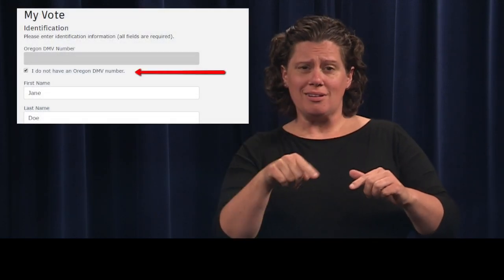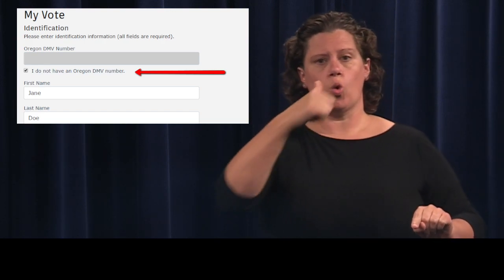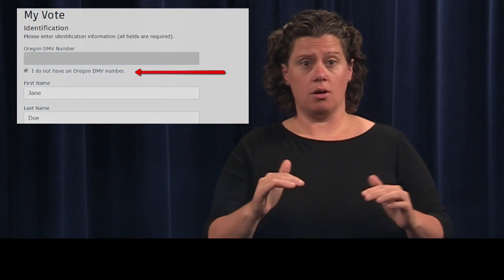Frequently Asked Questions. What if I don't have an Oregon DMV number? If you don't have an Oregon DMV number, you cannot register to vote online. But you can still complete the form online, then print it and mail it to your county elections office. Under the field for Oregon DMV number, check the box for I do not have an Oregon DMV number. Continue filling out the rest of the form with your name and birth date.